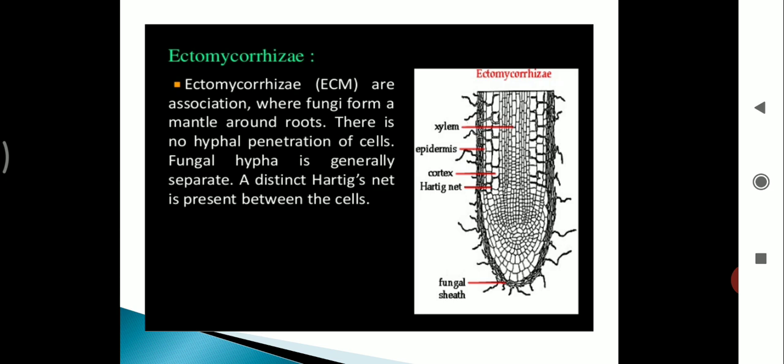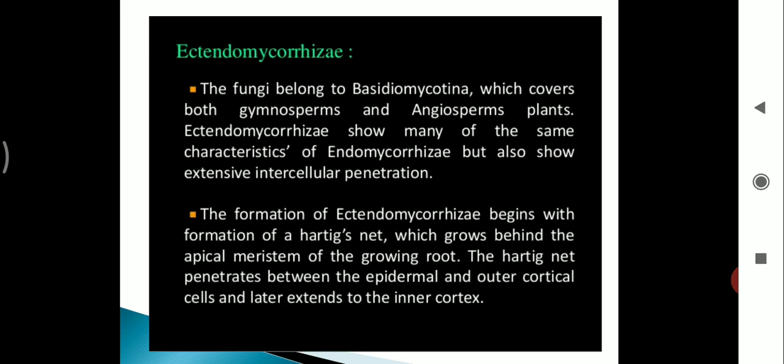Next, ectomycorrhizae. Ectomycorrhizae are associations where fungi form a mantle around the root system. There is no hyphal penetration of cells. Fungal hyphae are generally septate. A distinct hartig net is present between the cells.